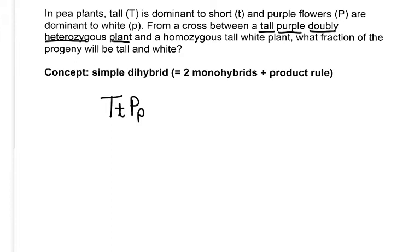— and you're going to cross that to a homozygous tall (two big T's) and white. We know white has to be two little p's because we've already been told that white is recessive. We're going to do that cross between these two.